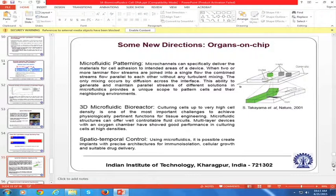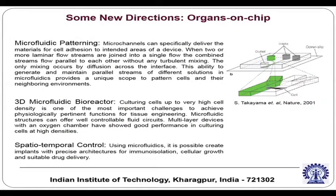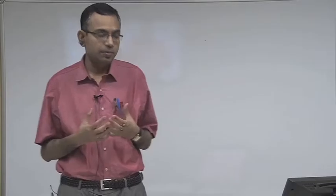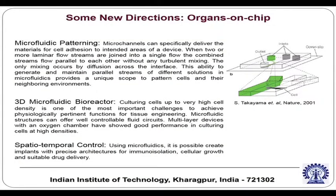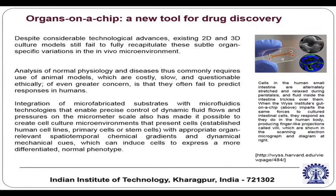Moving to new directions: we have discussed cell on a chip, but there are issues when single cell based analysis does not give a good enough indicator. So one needs to go for organs on a chip — instead of mimicking a single cell, one mimics a collection of cells representing an organ. Organs on a chip can be used as a new tool for drug discovery, studying the influence of drugs on a particular organ through totally in vitro studies.